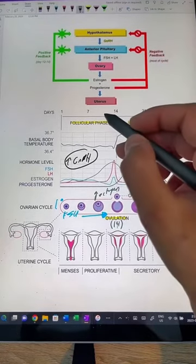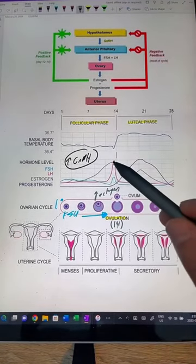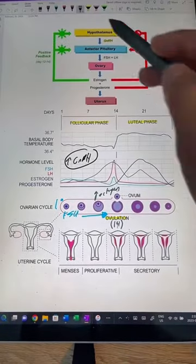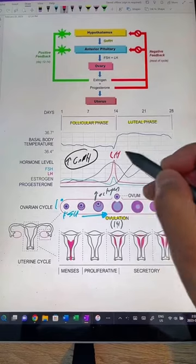However, at around day 10 here, as estrogen continues to rise with the follicles producing it, we get a positive feedback where it's going to trigger a huge LH spike, a surge.